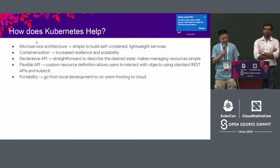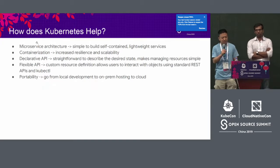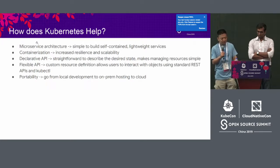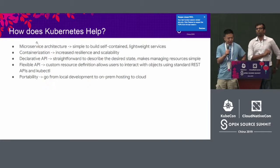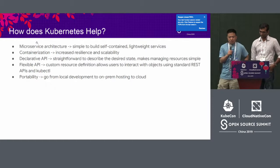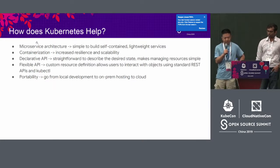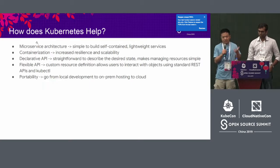Kubernetes is also good at describing desired state through declarative APIs versus imperative ones. This makes managing resources very easy — you just describe the desired state instead of writing complicated provisioning instructions. Kubernetes has a very flexible API, letting us extend the core API with custom resource definitions, allowing us to interact with objects using standard REST APIs and tools like kubectl. Finally, Kubernetes is very portable — whether local development, on-premise hosting, or the cloud, your application should run everywhere a Kubernetes cluster is deployed.